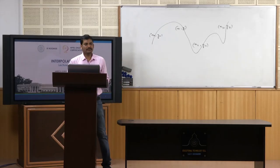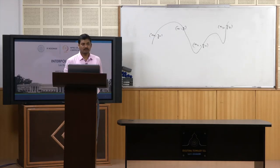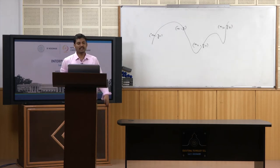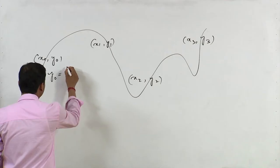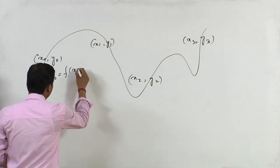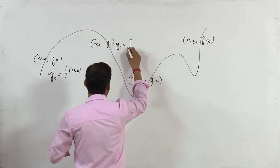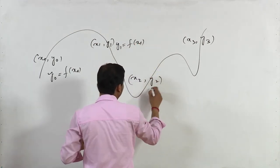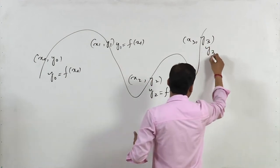The process of finding a curve passing through points like (x0,y0), (x1,y1), (x2,y2), (x3,y3) is called interpolation, and the obtained curve is called the interpolating curve. Here, y0 is the value of f at point x0, y1 is f(x1), y2 is f(x2), and y3 is f(x3).